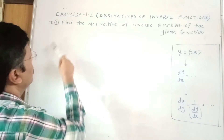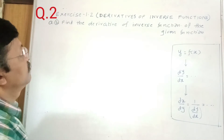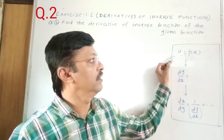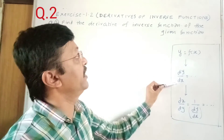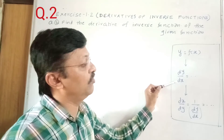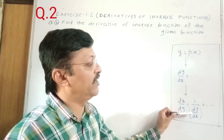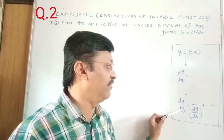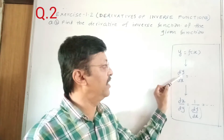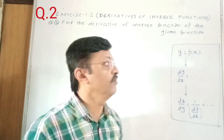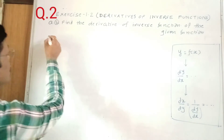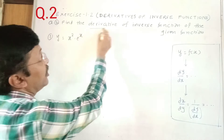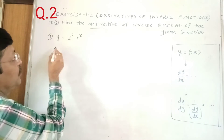Now question number 2 from the exercise: find the derivative of the inverse function of the given function. You are given y = f(x), find dy/dx, then from dy/dx find dx/dy = 1 upon dy/dx. So you find dy/dx first, and from that find the derivative of the inverse function. Let's take the example y = x² × e^x.